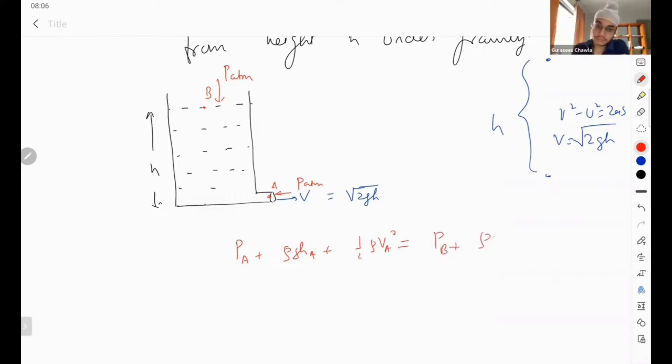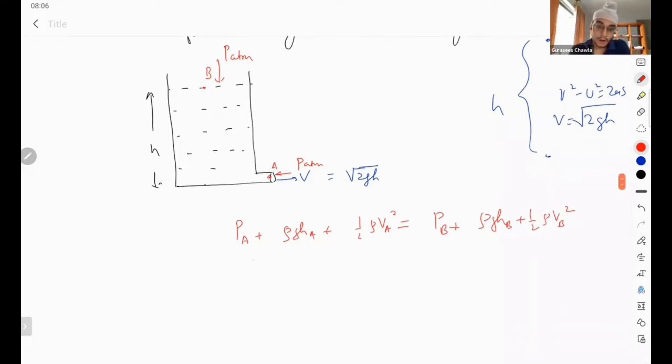So pressure at a and pressure at b, they will cancel out because pressure at a and pressure at b is equal to pressure atmospheric which is acting from the two sides on the liquid column.